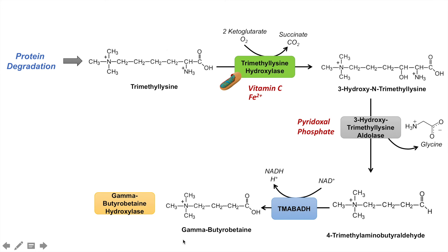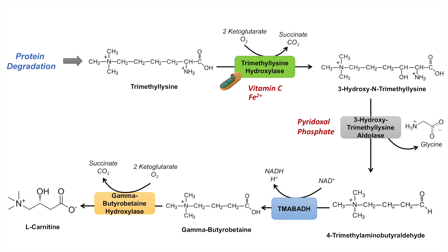Gamma-butyrobetaine aldehyde can then be acted on by gamma-butyrobetaine hydroxylase to form L-carnitine. This enzyme adds a hydroxyl group to the third carbon of gamma-butyrobetaine aldehyde. In the process it utilizes 2-ketoglutarate and oxygen as cofactors, converting them into succinate and carbon dioxide. This is how we biosynthesize L-carnitine, which can then be utilized to transport long-chain fatty acid chains into the mitochondria for beta-oxidation.